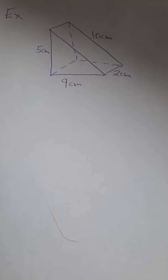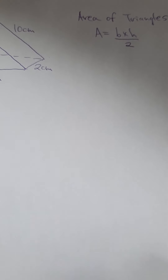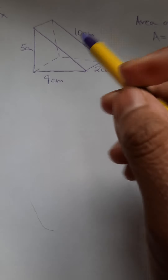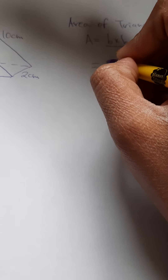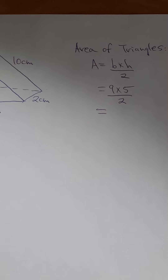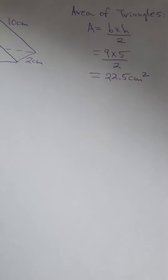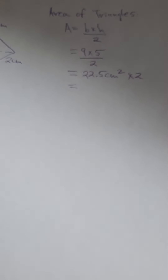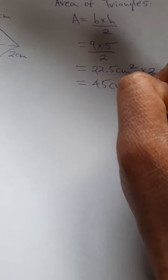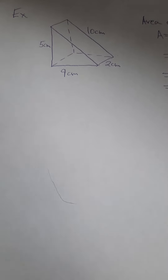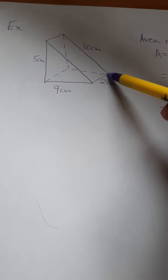Let's start with the area of the two triangles. The formula for the area of a triangle is base times height divided by 2. So we have 9 times 5 divided by 2, which gives us 22.5 centimeters squared. We multiply by 2 because there's a triangle at the front and another at the back, giving us 45 centimeters squared.